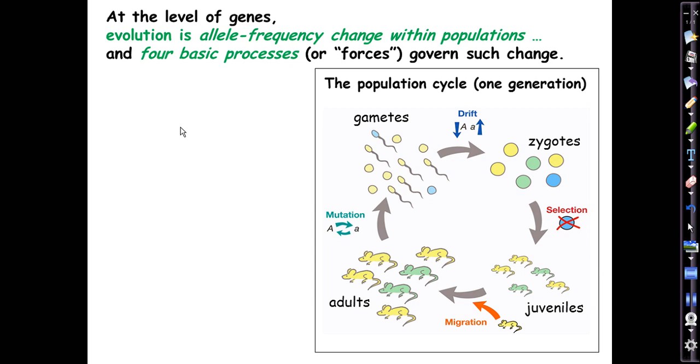Hello. At the level of genes, evolution can be thought of as a matter of allele frequency change within populations. It often seems complicated. Our goal here in lecture six is to show you that it really is actually very simple, and these wonderful illustrations by Heron and Freeman from your textbook help to make that case. There are four basic processes, or metaphorically forces, that govern this process of allele frequency change.